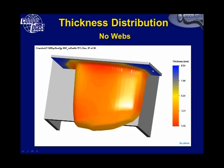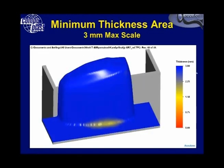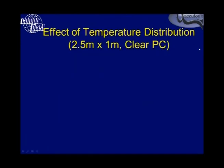The final thickness distribution shows the initial sheet thickness at about 9.5 mm and a minimal thickness of about 1.13 mm. We can adjust the scale to show everything below 3 mm — anything blue is 3 mm or higher. There is a thin area in the corner, but since the trim line for the part is above that, we don't need to worry about it and we produce an acceptable part.